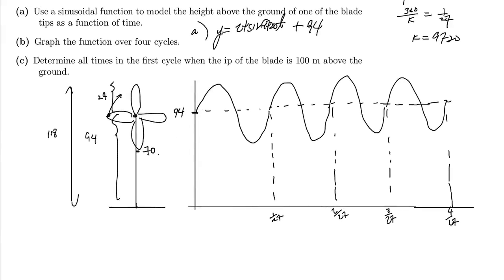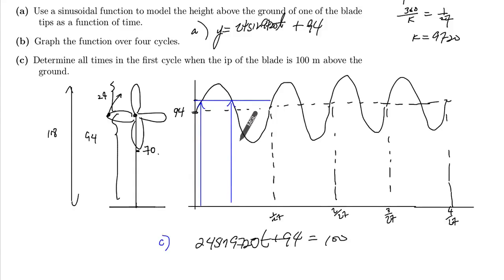And part C, determine all times in the first cycle when the tip of the blade is 100 meters above the ground. So for part C, we just have to make this here equal to 100. So if that's 94, 100 will be about there. We're looking for these two times. When does that happen? And when does that happen?